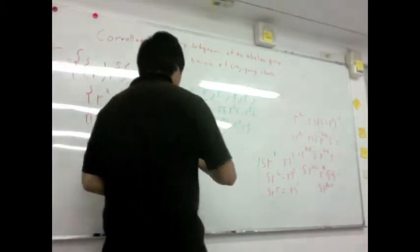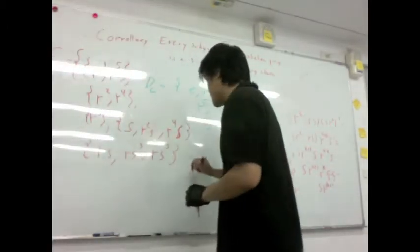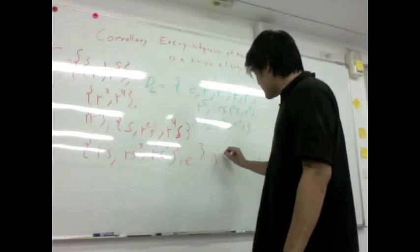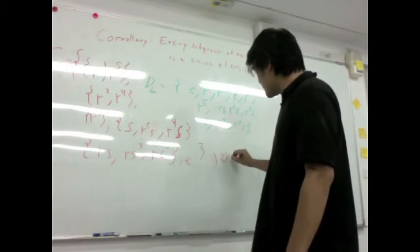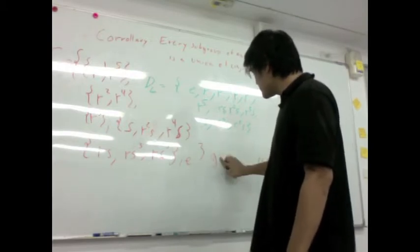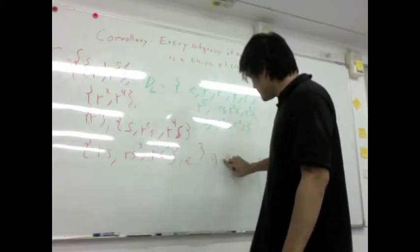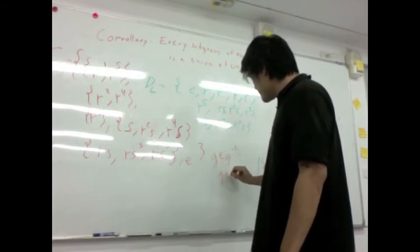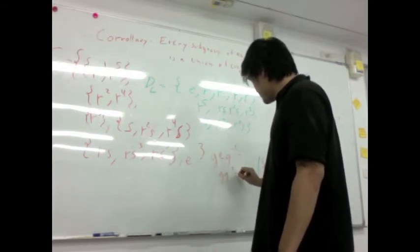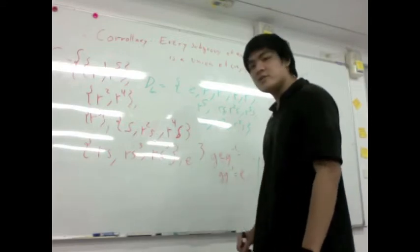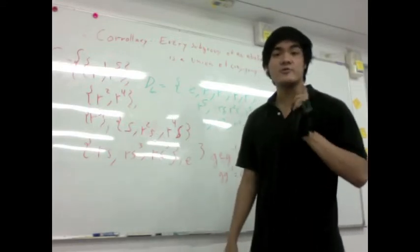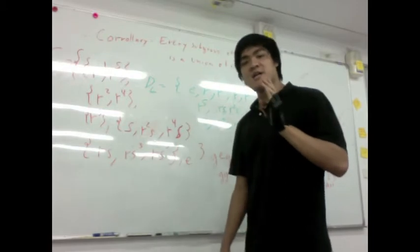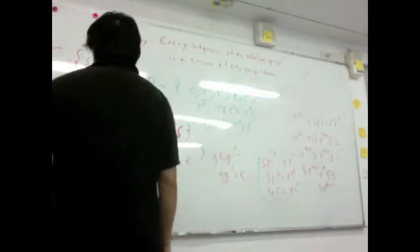The identity should always be composed of its own conjugacy class. The reason why is because g x g-inverse, or g e g-inverse — the identity — is always equal to g g-inverse, which equals e. So you always guarantee at least one conjugacy class with exactly one element, and that would be the identity element.